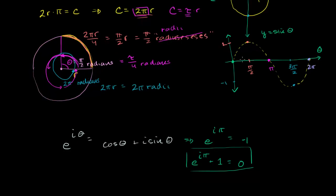It makes the sine function cleaner too. Instead of writing pi over 2, when you look at a graph you're asking — is this one fourth around the circle? Was this one half? With tau it becomes obvious: pi over 2 is the same thing as tau over 4. Pi is the same thing as tau over 2.